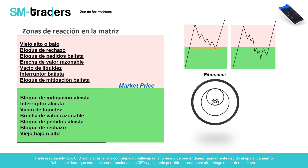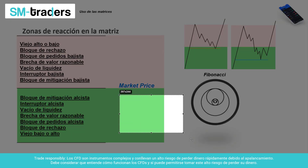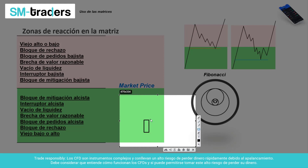Dentro de la zona premium, vamos a encontrar en orden de jerarquía, de lo más importante a lo menos importante. En primera instancia, tenemos el viejo alto o viejo bajo, en este caso el que reposa por debajo del mínimo. Luego viene el bloque de rechazo. Posterior a eso, tenemos un bloque de pedidos alcista, que es el bloque de pedidos tradicional: una vela roja seguida de una vela alcista.